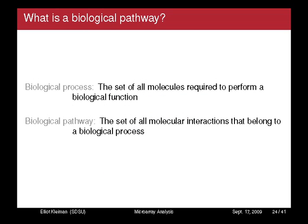I would like to talk about how to map gene expression data in terms of biological pathways. A biological process is the set of all molecules required to perform a biological function. A biological pathway is the set of all molecular interactions that belong to a biological process. Given these two terms, you can map your gene expression data and represent it in terms of biological processes and biological pathways.